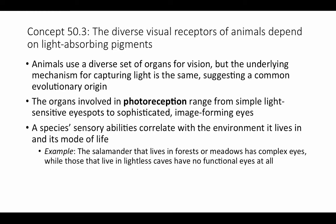A species' sensory abilities are going to correlate with the environment it lives in and its mode of life. This is another example of form following function. Natural selection is going to favor structures that are necessary for an animal to survive in its environment, so there's going to be a very strong correlation between structure and function. For example, a salamander that lives in forests or meadows will have complex image-forming eyes, whereas those that live in lightless caves may have no functional eyes at all.